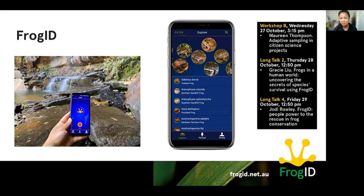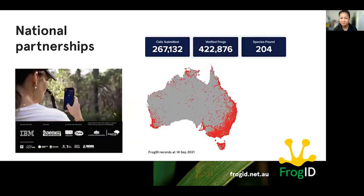For more on Frog ID, I highly recommend you check out the fabulous presentations from others in the Australian Museum Frog ID team who will be sharing more on its achievements and national research and conservation. Between 2017 and 2021, Frog ID established donor and partnership support with organizations that have a statewide or national presence, such as natural history museums and Bunnings Australia, and this has really helped engage with not only schools but the broader community on a national scale.